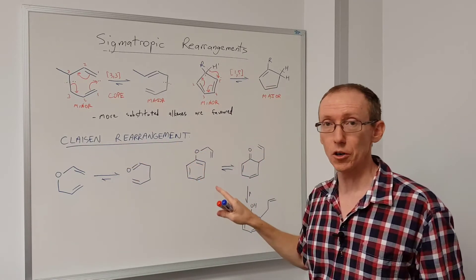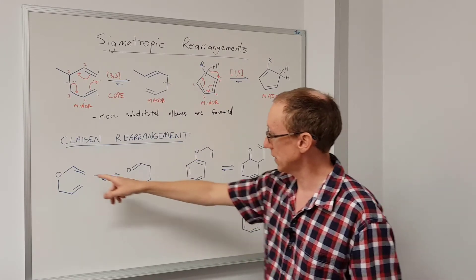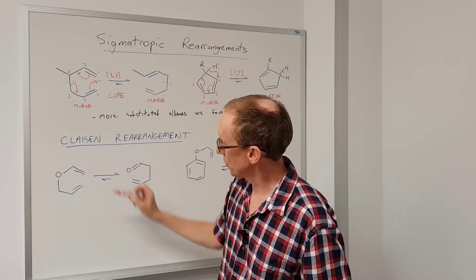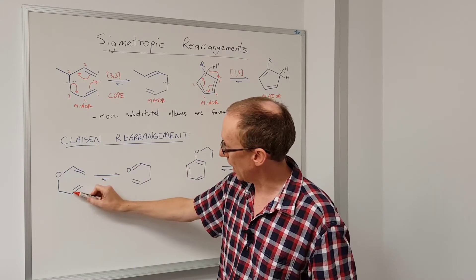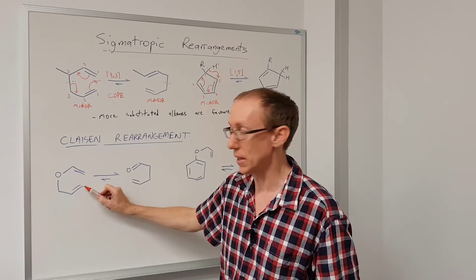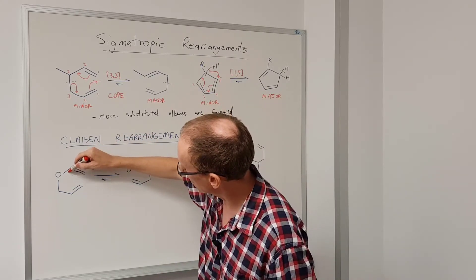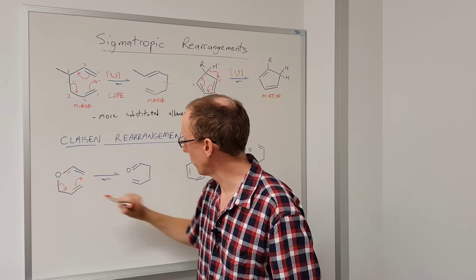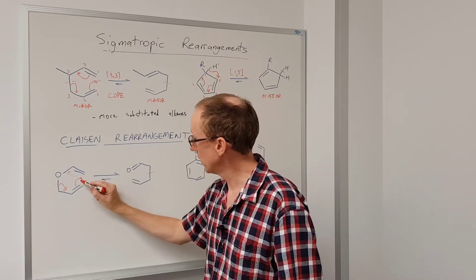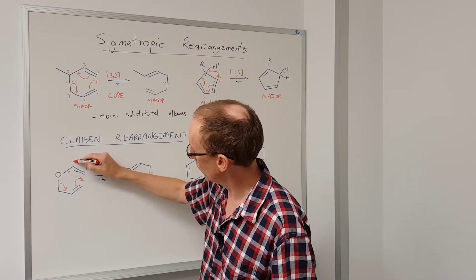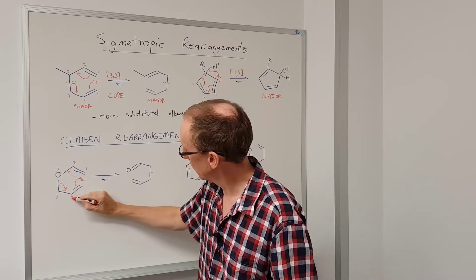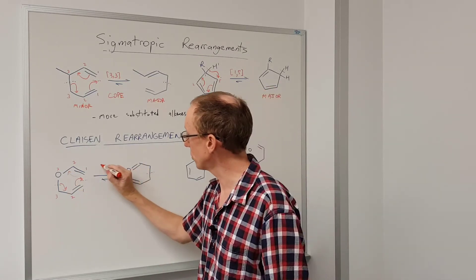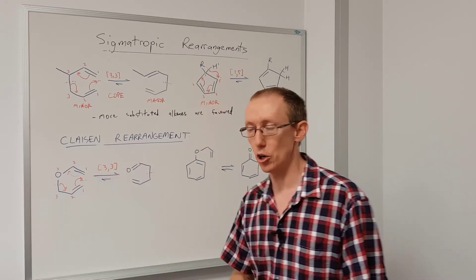A very important type of sigmatropic rearrangement is the Claisen rearrangement. Here's the simplest case. This involves a vinyl allyl ether. A vinyl group is where we have alkene directly attached to something, and an allyl group is where we have a carbon CH2 and then a double bond. The curly arrows can be drawn like this to show how the product forms. There's the bond that's breaking, there's the bond that's formed. So once again we number one side versus the other. There's three atoms on one half of this transition state and three atoms on the other. So this is also a 3,3 sigmatropic rearrangement.